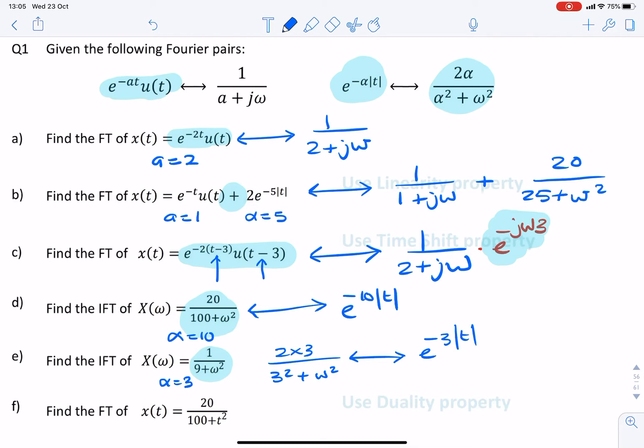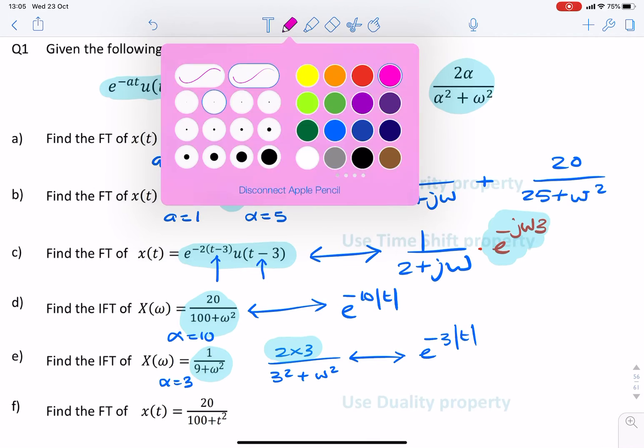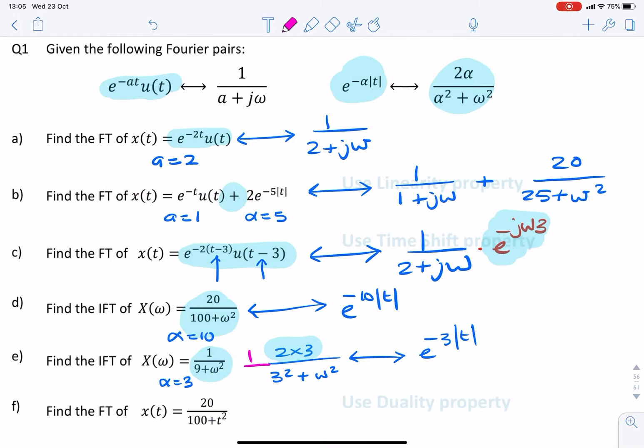But we don't. We don't have this 6. What we do have is a 1. So it's as if we're dividing by 6. So again, you need to divide the corresponding time domain signal by 6.